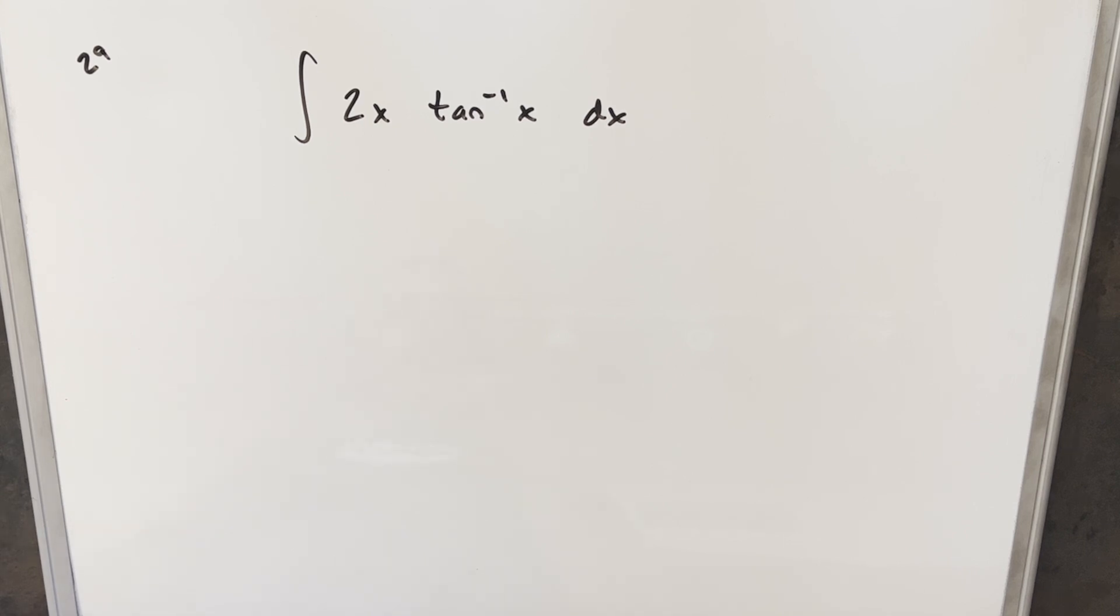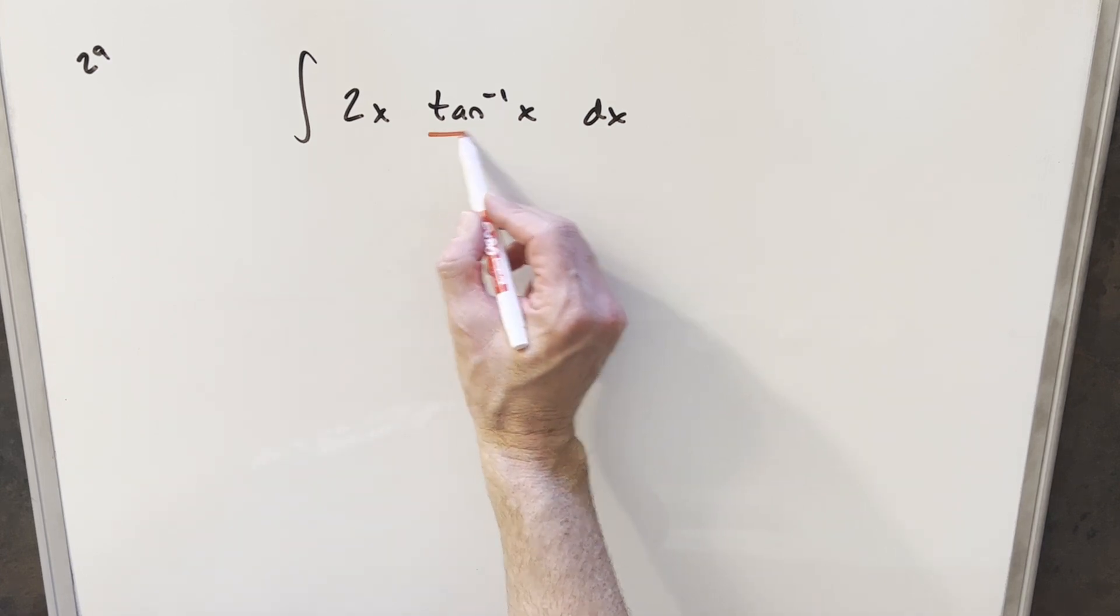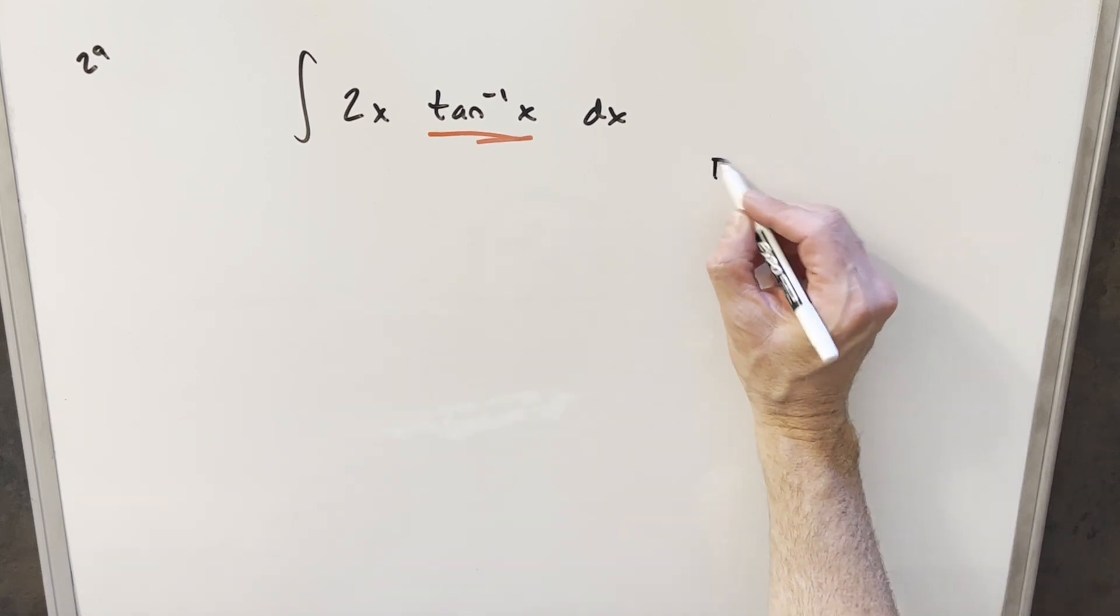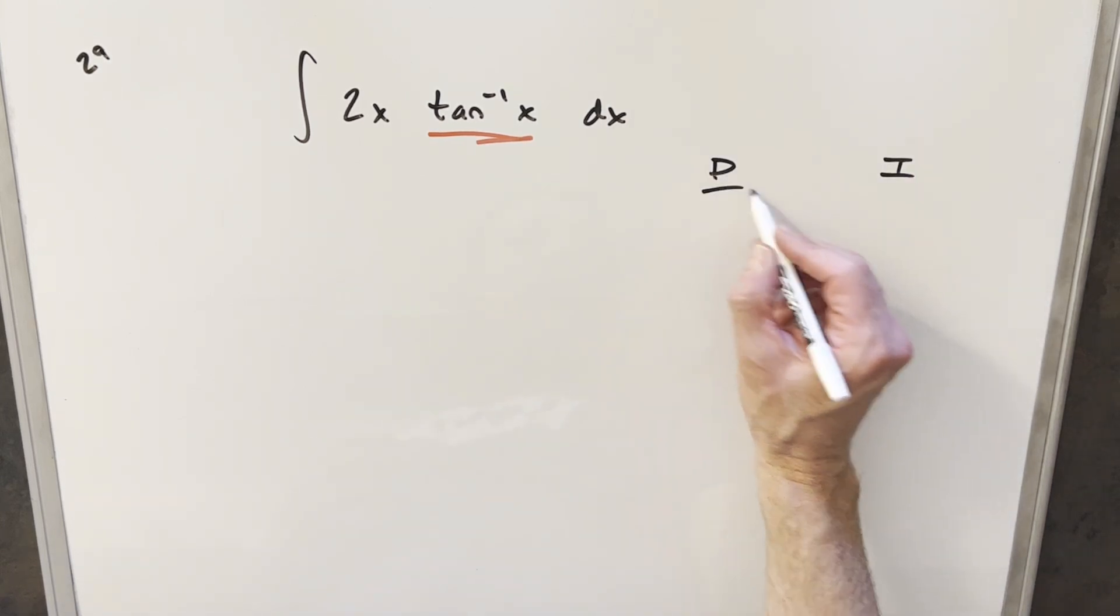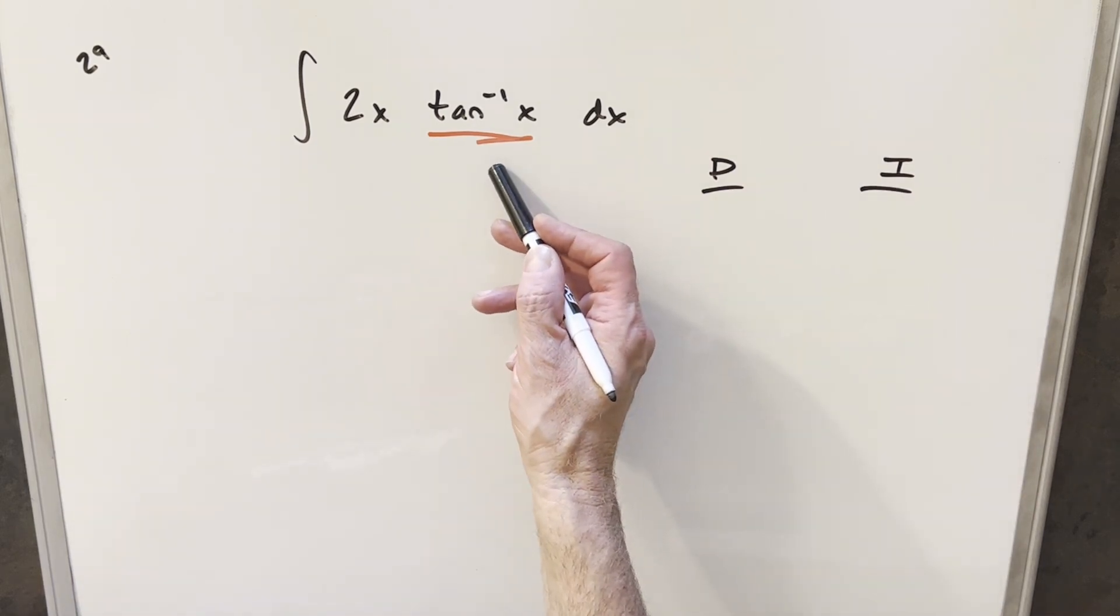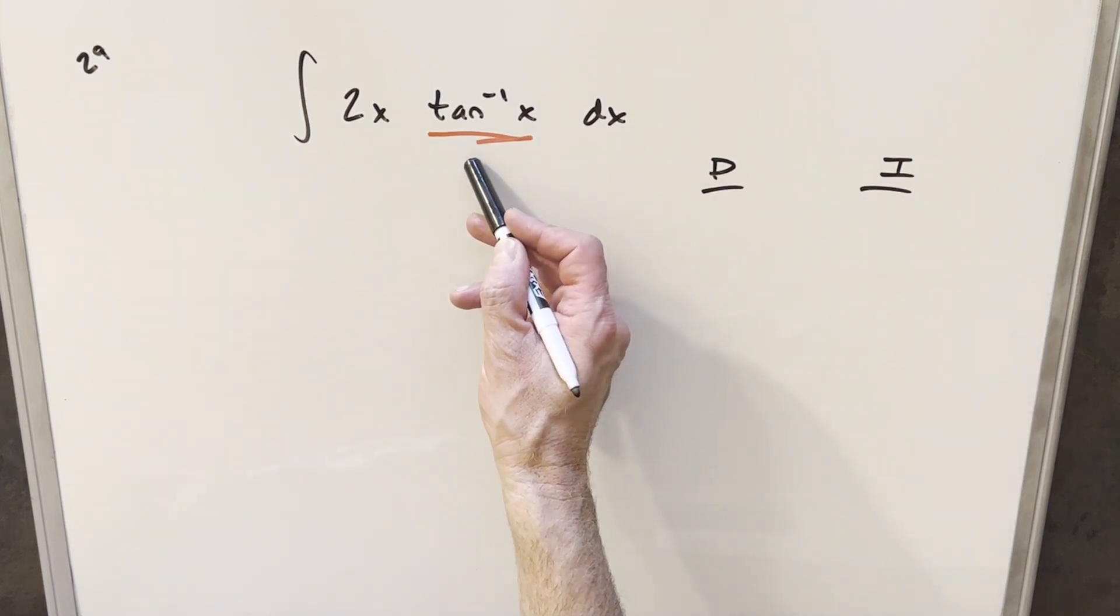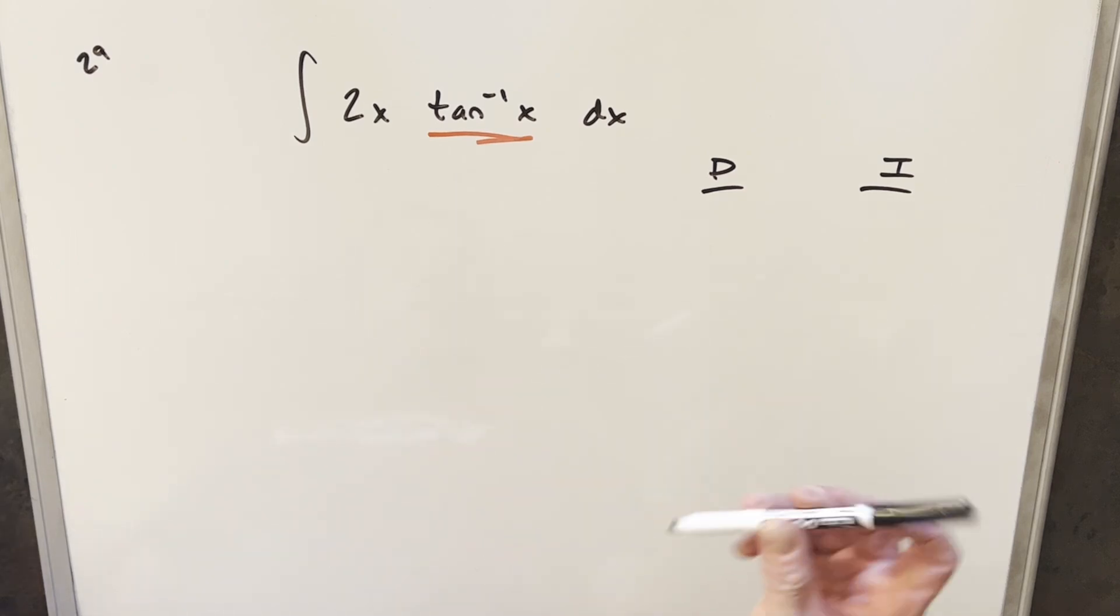And to get started with this, the thing I notice here, dealing with Arctan can be a little bit tricky. But what we do with that, usually dealing with Arctan is a lot like dealing with natural log. And my first thought is to do integration by parts. And we'll do that using the DI method or tabular integration. And the reason this usually works so well is it allows me to differentiate Arctan so I can kind of avoid integrating it.